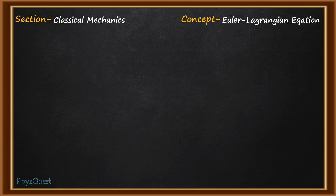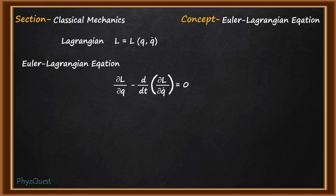First of all, in classical mechanics a system is defined through its Lagrangian which is a function of position and velocity or the first order derivative of position. In order to bring out the equation of motion of the system, Euler Lagrangian equation is established which is ∂L/∂q - d/dt(∂L/∂q̇) = 0.